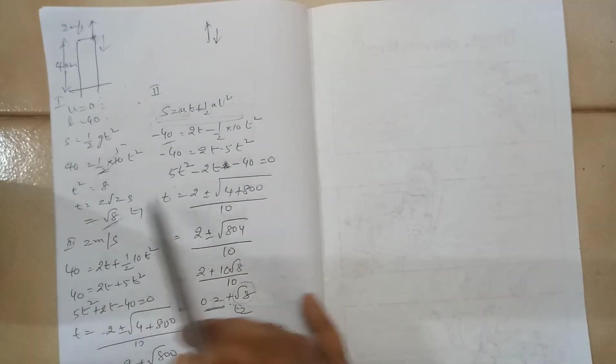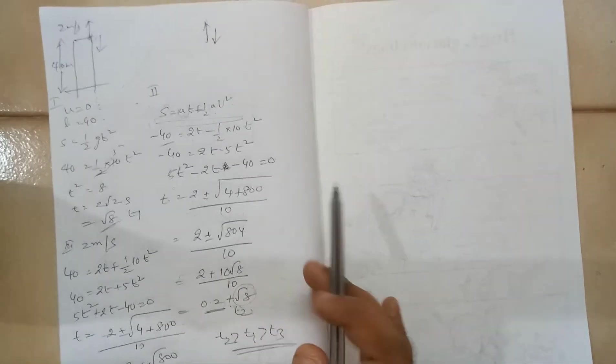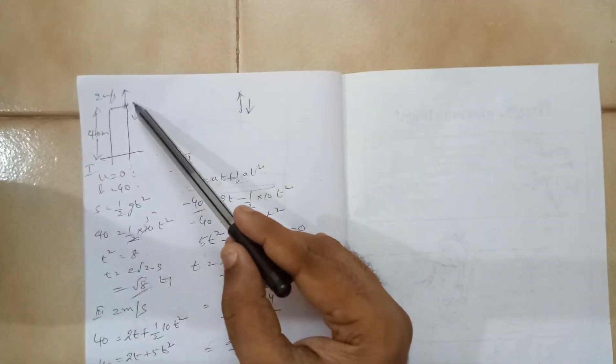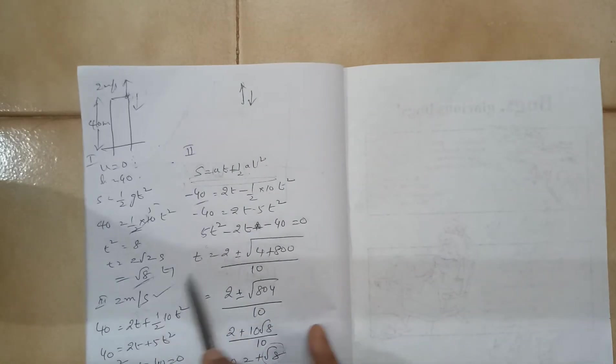So this is slightly more than the first case. First case was root 8 seconds. This is root 8 plus 0.2 seconds. If you take the case of the third one. In third case, you are throwing the object in the downward direction with initial speed u equals 2 meter per second.